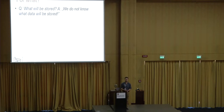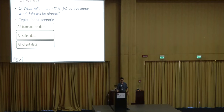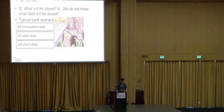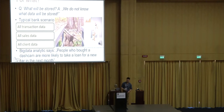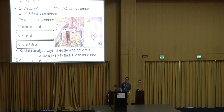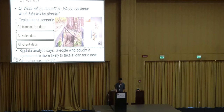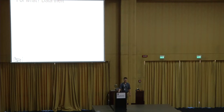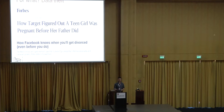What can be found in a big data solution? In one bank, we asked what data would be stored in their big data solution, and they answered: 'We don't know.' A typical bank scenario is to put all transaction data, all sales data, all client data, and combine it together. Then big data analytics says: 'People who bought a dashcam are more likely to take a loan for a new car next month' — because people have more accidents when they know they have a camera. And that is money. Data theft is a big risk — Target shops knew a girl was pregnant before she did, and Facebook knows when you'll get divorced before you do.